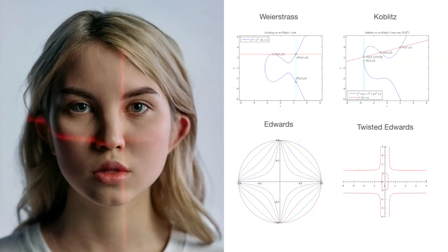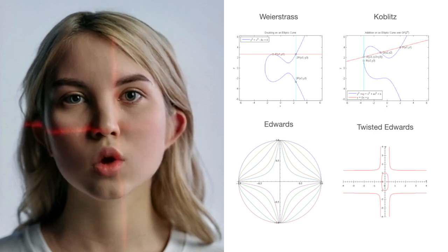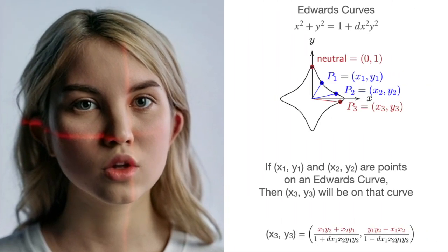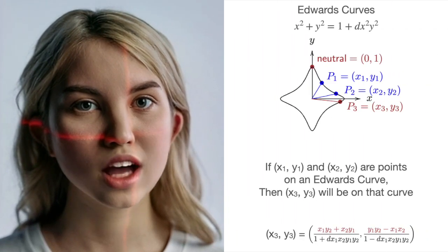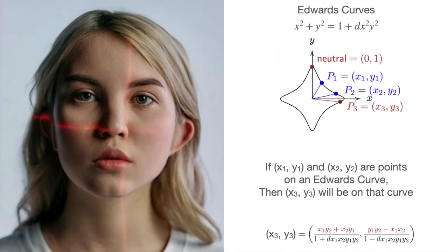The double and add method is independent from the adopted curve. It could be elliptic curves in Weierstrass or Koblitz form, Edwards curves, or twisted Edwards curves. We will use the point addition and doubling formulas for the adopted one.